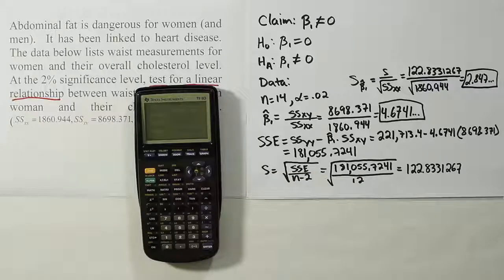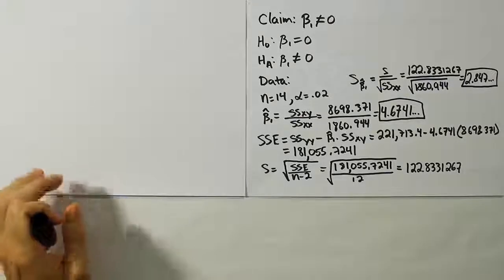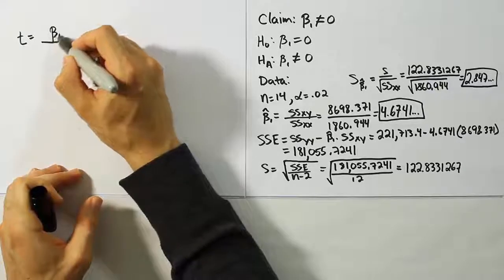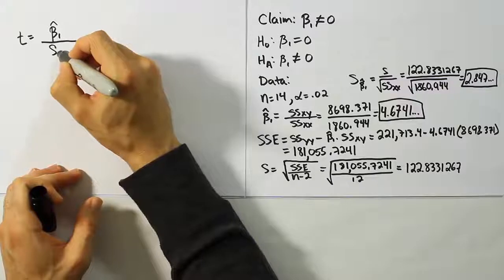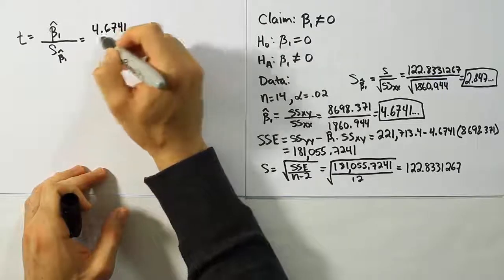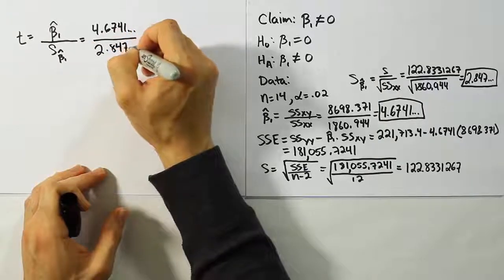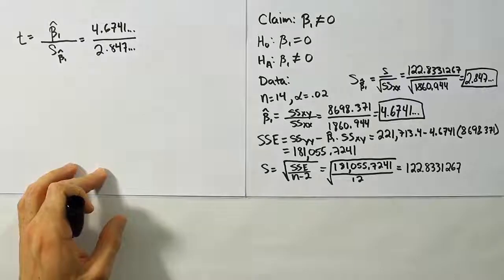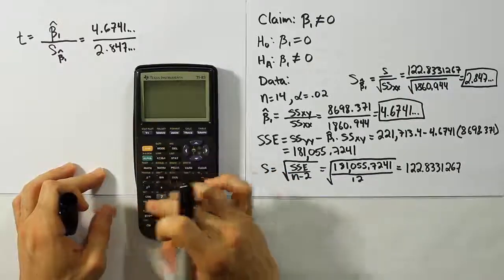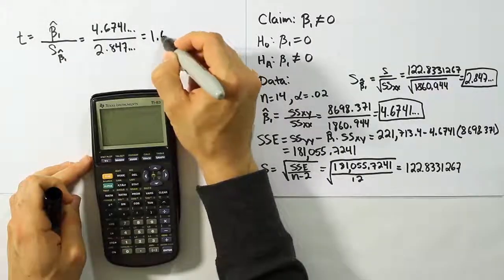Let's get a sheet of paper out, and let's calculate the test stat and do the critical value. Now that we've done our data step, let's calculate our test stat, which should be nice and easy now. It's just a fraction that involves beta 1 hat and the standard error for beta 1 hat. Beta 1 hat we found out was 4.6741, and the standard error for beta 1 hat was 2.847. I've stored these values in my calculator as B and S. So, I'll divide B by S, and I get the answer 1.642.